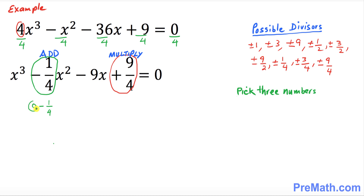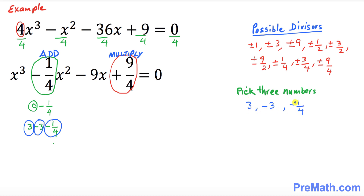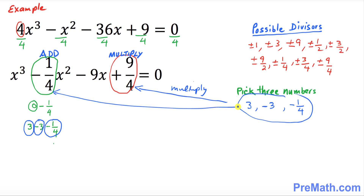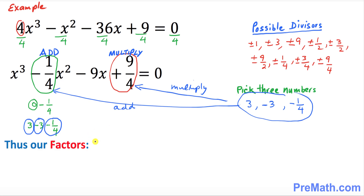That zero can be written as 3 minus 3, leaving negative 1 over 4 as the third term. So our three numbers are positive 3, negative 3, and negative 1 over 4. If you multiply them you get 9 over 4, and if you add them you get negative 1 over 4. We now have our three numbers, so we can form the factors.